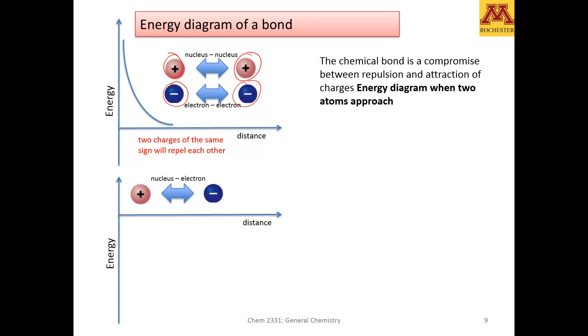However, what drives the chemical bond, the attracting interactions, are the attraction among the electrons of one atom and the nuclei of the other atoms. And this, as you may remember, has an attraction potential.